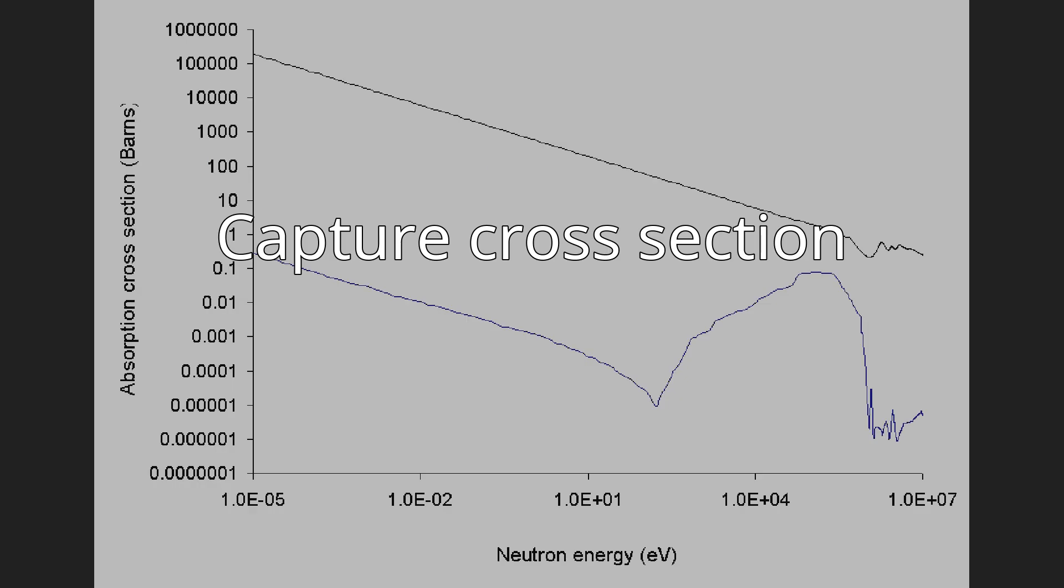The absorption neutron cross-section of an isotope of a chemical element is the effective cross-sectional area that an atom of that isotope presents to absorption and is a measure of the probability of neutron capture. It is usually measured in barns. Absorption cross-section is often highly dependent on neutron energy. In general, the likelihood of absorption is proportional to the time the neutron is in the vicinity of the nucleus.